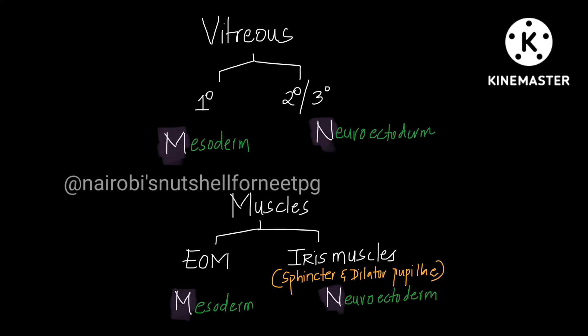When talking about different types of muscles in the eye — extraocular muscles and iris muscles — E comes before I, the same way M comes before N. So extraocular muscles are from mesoderm and iris muscles are from neuroectoderm. The third muscle is ciliary muscles. Ciliary has C in it, so it is from neural crest cells. So all three important muscles are done.